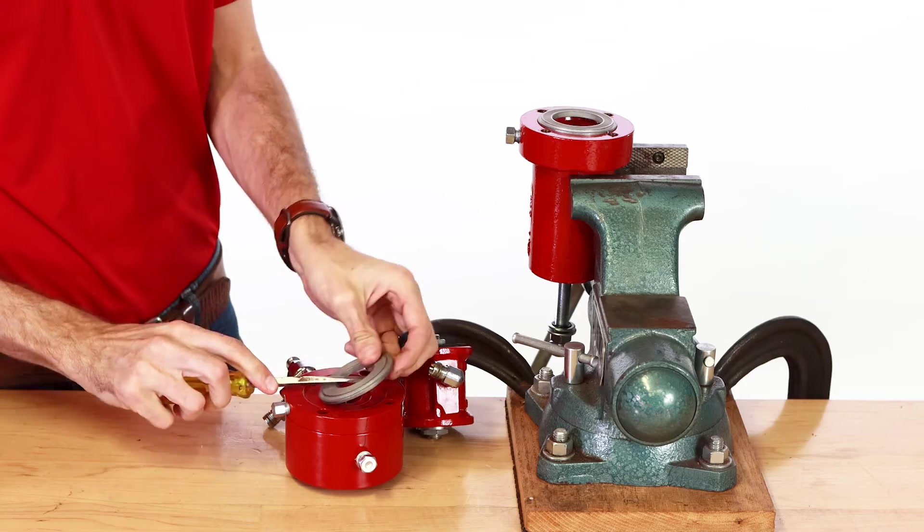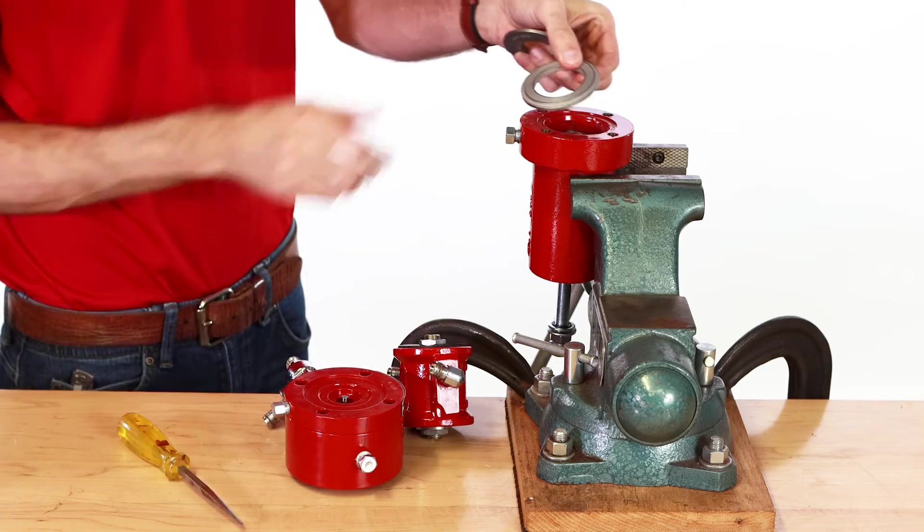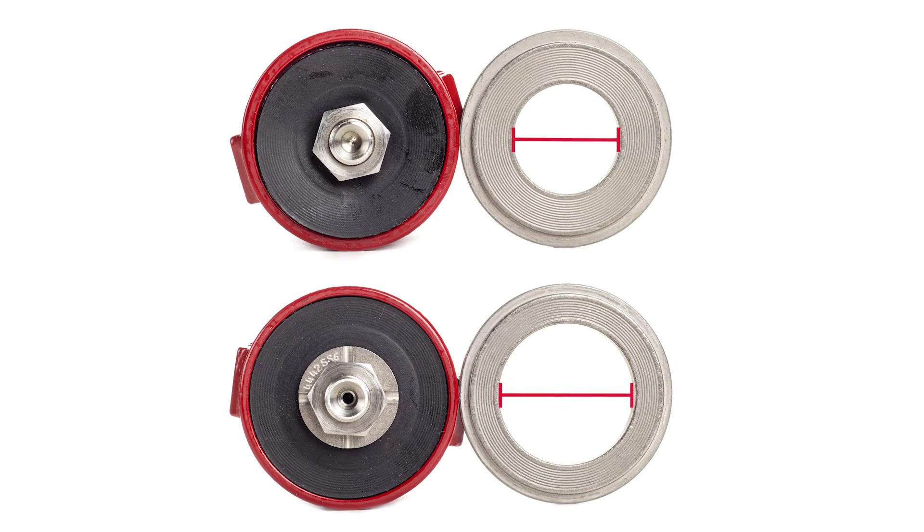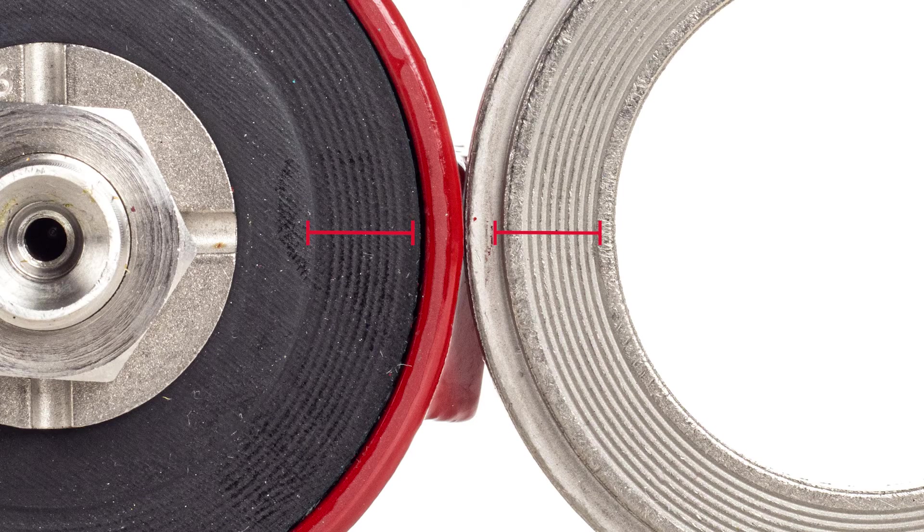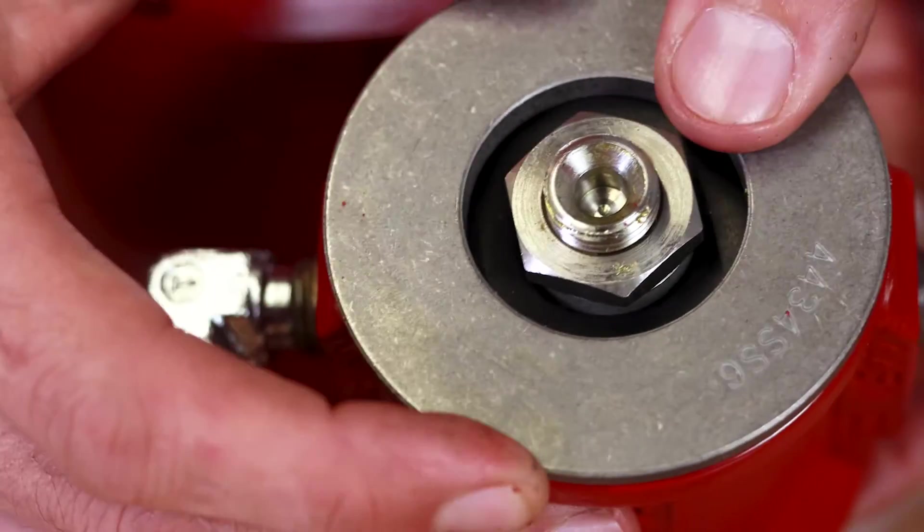Remove both diaphragm plates. If they are stuck use a flathead screwdriver to remove them. The two diaphragm plates have different inner diameters. To differentiate between them look at the grooves on the diaphragms. The width of the diaphragm grooves will match the width of the plate grooves. Replace the diaphragm plates on the correct diaphragms.